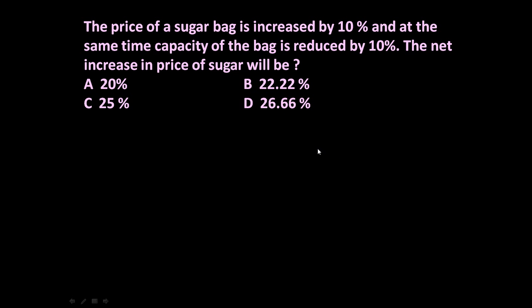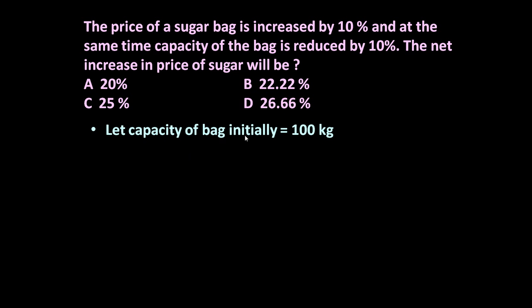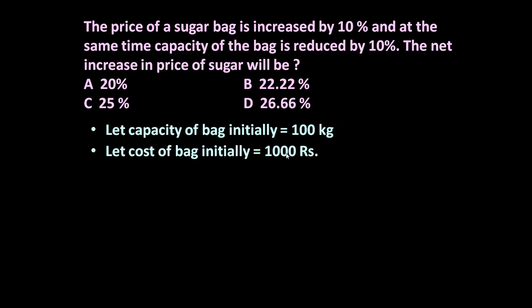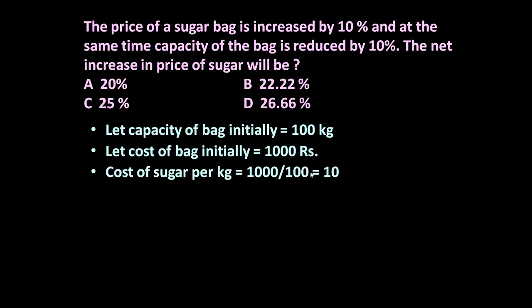To answer this question, let us assume the initial capacity of the sugar bag is 100 kg and the cost of the bag initially is rupees 1000. That means the cost of sugar per kg is equal to 1000 divided by 100, which is equal to rupees 10. So initially the cost of sugar is rupees 10 per kg.